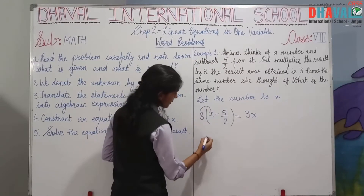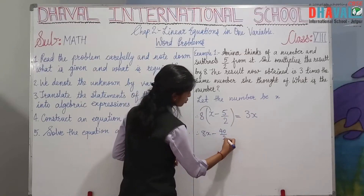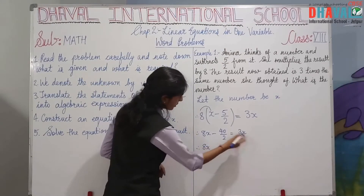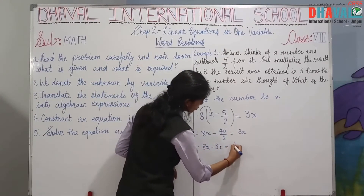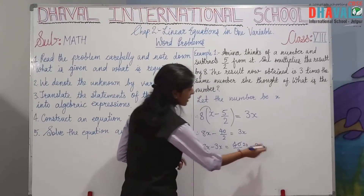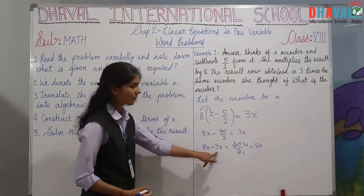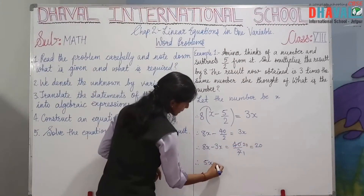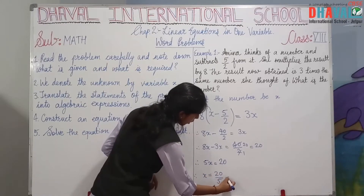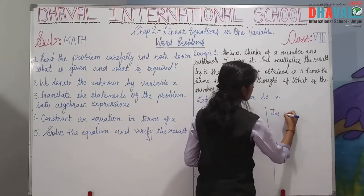तो इसका equation हम लिखेंगे: 8 से multiply होगा तो 8(x minus 5 upon 2) = 3x। Expand करने पर: 8x minus 40 upon 2 = 3x, यानि 8x minus 20 = 3x। x और x को एक तरफ करेंगे: 8x minus 3x = 20, तो 5x = 20। इसको divide करेंगे तो answer आएगा x = 4।